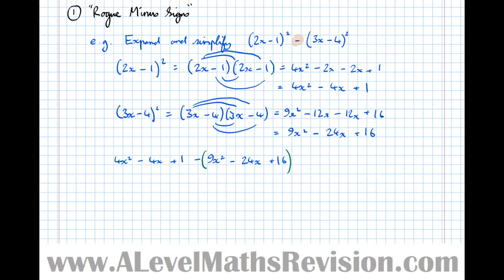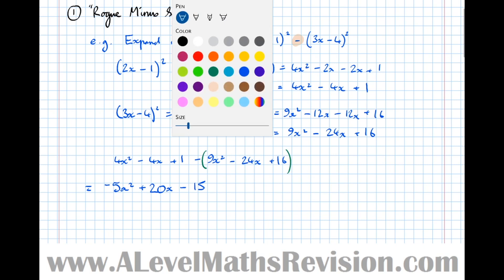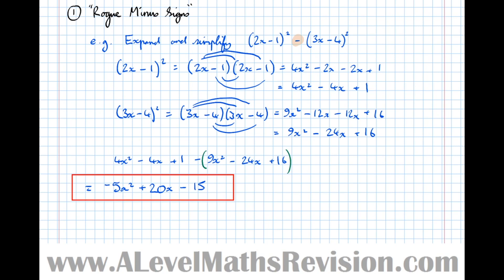Now that's correct. I call it a rogue minus sign because exam boards put it there to catch you out — it's perfectly valid, but it's rogue in the sense that it trips students up. With the brackets in place we get a completely different answer: 4x squared minus 9x squared is minus 5x squared. Then minus 4x minus minus 24x is a double minus, so minus 4x plus 24x which is plus 20x. Finally 1 minus 16 is minus 15. So the answer is minus 5x squared plus 20x minus 15. Watch out for minus signs between brackets — remember the sign applies to the whole bracket.